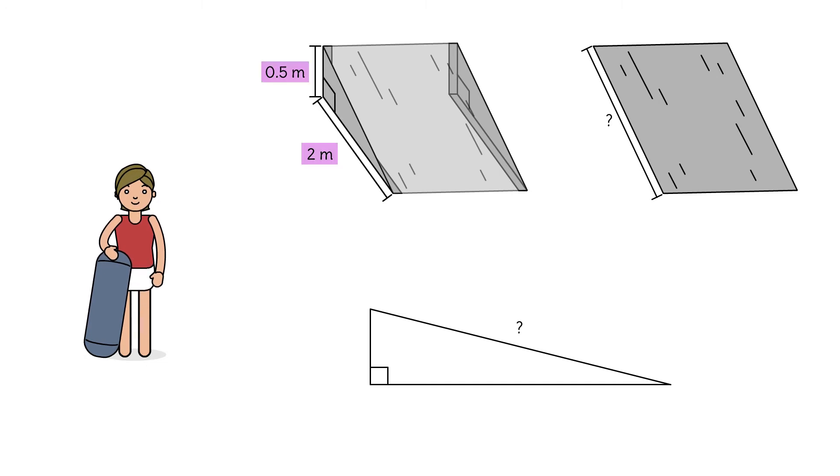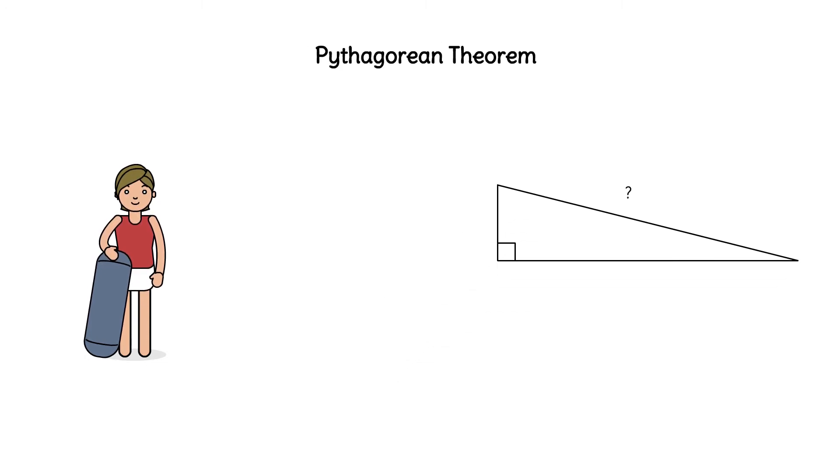Because we know the length of both legs, we can use the Pythagorean theorem to solve for the hypotenuse. Remember, the Pythagorean theorem states that a squared plus b squared equals c squared.